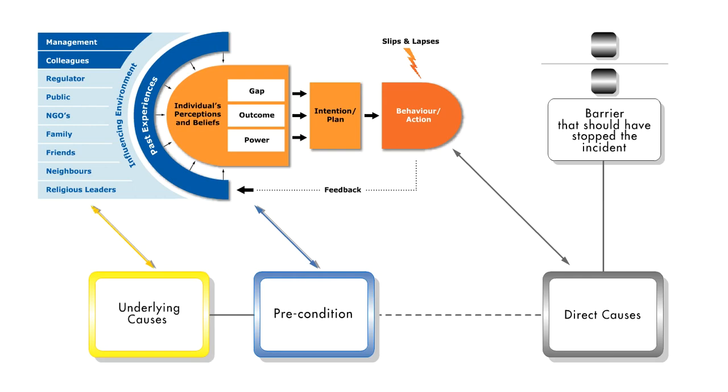Using the human behavior model with the tripod incident analysis methodology helps to clearly identify both the direct and underlying causes. It also makes the conclusions more personal because, as managers and colleagues, we can see our role in creating the environment that led to the incident. We therefore should always try to understand the unintended consequences our actions have on the beliefs and perceptions of others. Once we understand how we unintentionally influence others, we can help create an influencing environment that prevents incidents.